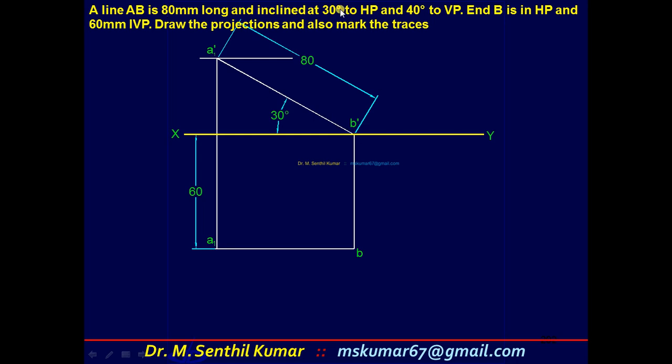So considering 80 and 30, draw the preliminary front view. True length and true angle theta. What is this length? BA1 is equal to top view length here.